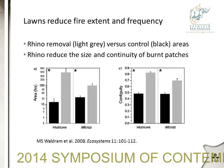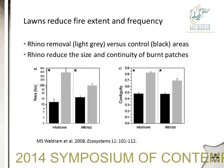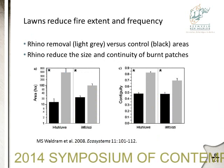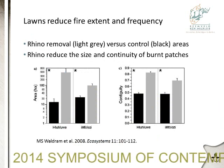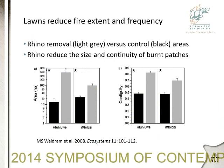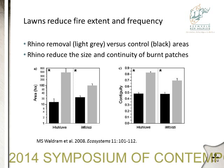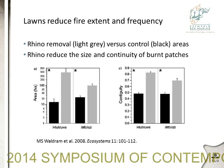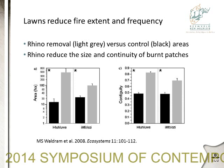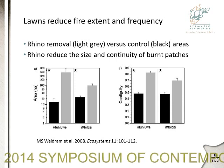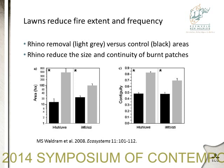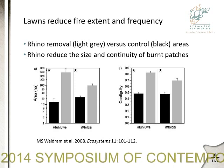The functional importance of grazing lawns also goes beyond biodiversity questions. Grazing lawns, because they are so short, are very effective fire breaks — they stop fire going through your grassland. So grazing lawns can strongly reduce fire extent and fire frequency.